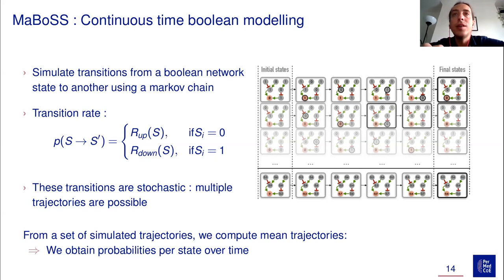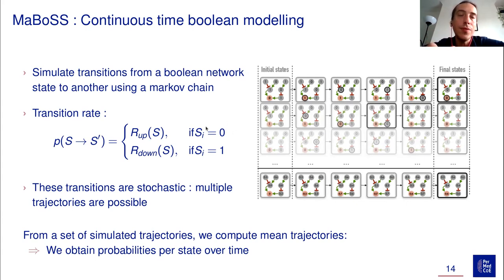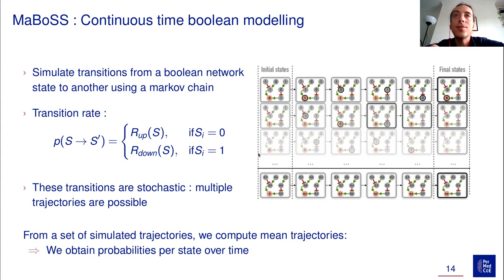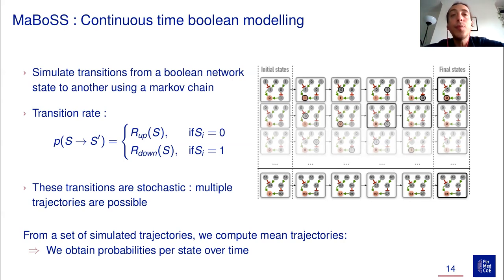Transitions between states are governed by a formula with two types of rates: if a node is inactive, its transition rate depends on its activation rate; if the node is already active, the transition rate is its inactivation rate. All these trajectories can be different since transitions are stochastic, so we simulate many of them. From this set of simulated trajectories we can compute mean trajectories and obtain probabilities per state over time.